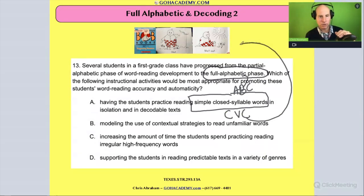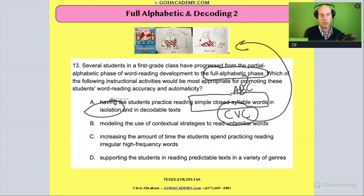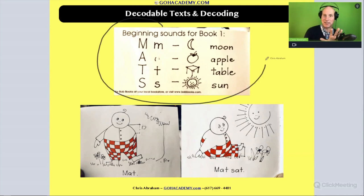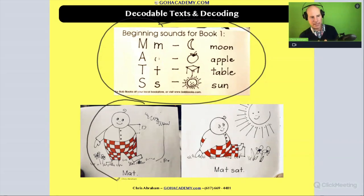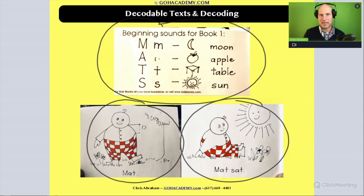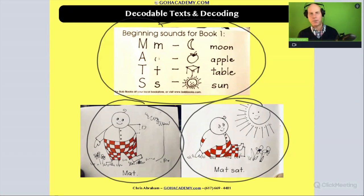Whenever we teach a phonics rule, we always do it in isolation first. In the Bob Books, they go through the beginning sounds in isolation first, and then the student gets to practice using the alphabetical principle in context. That's exactly how these books are designed — exactly for that student at the fully alphabetical phase. This is a great question. I hope you're enjoying it and getting kind of this — you see the enjoyment that I'm experiencing, and I hope you dig it, because you're going to need it to get through all this.